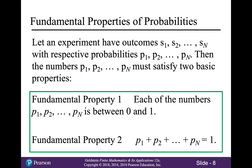Now on to fundamental properties of probabilities. Let an experiment have outcomes S1, S2, all the way up to S sub n, with respective probabilities P1, P2, all the way up to P sub n. Then the numbers P1 through P sub n must satisfy two basic properties. First, each of those numbers P1 through P sub n is between 0 and 1. And second, all of those numbers P1 through P sub n have to add up to 1. This first property is a really important one to keep in mind, because when grading probability questions, I find that people will write down answers that are not valid probabilities — usually a number greater than 1, but it also can't be negative.